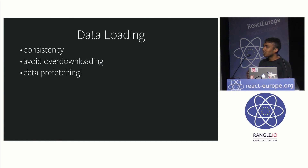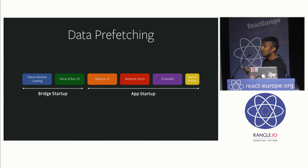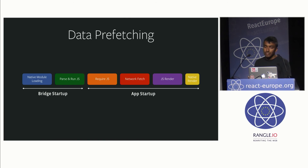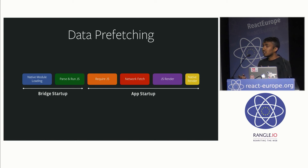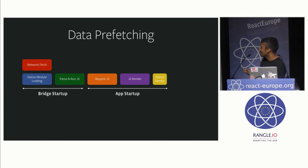We also have this idea called data prefetching. The whole idea is: what if we could fetch the content before the React Native screen actually shows up? React Native screen startup time can be pretty significant. It splits into two parts: first, bridge startup — starting up the whole JS bridge, native modules initializing, then parsing and running the JS. Then your app startup: the requires, network fetch, JS render, and finally native render into actual views. Our main idea was that if we knew what the screen would need to load right when the user taps to open it, we could load that content immediately, so by the time JS eventually does the network fetch, we already have the content and can skip straight to rendering it.